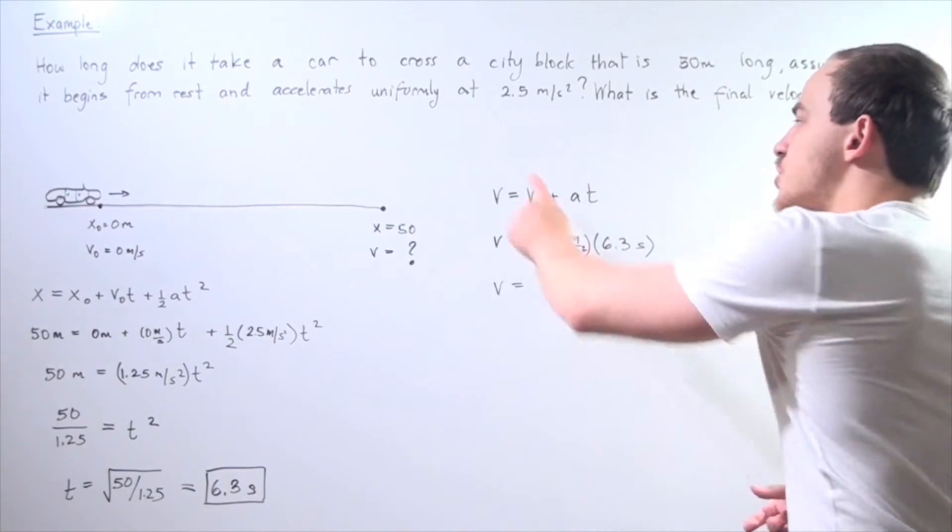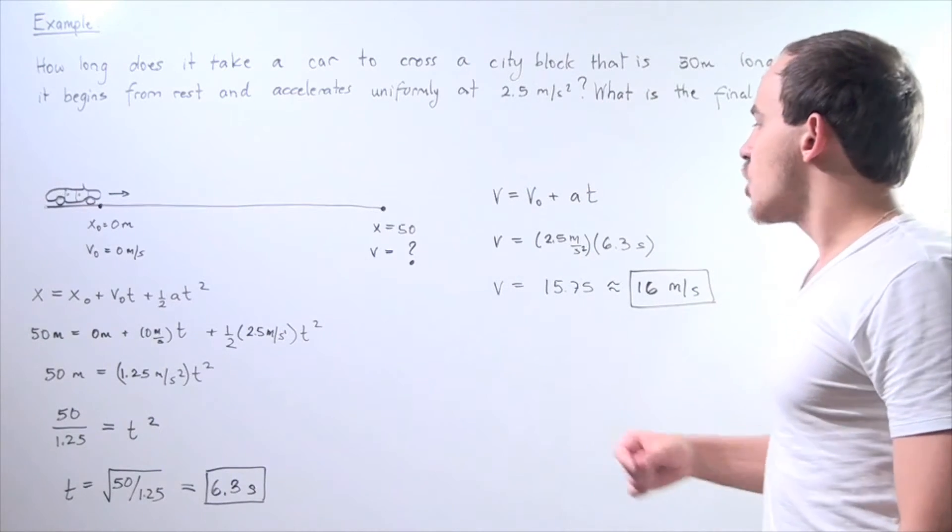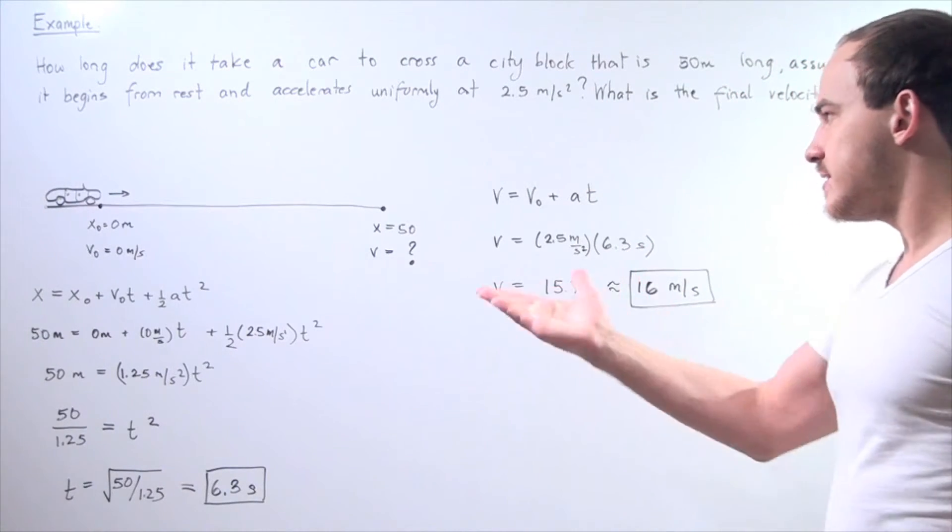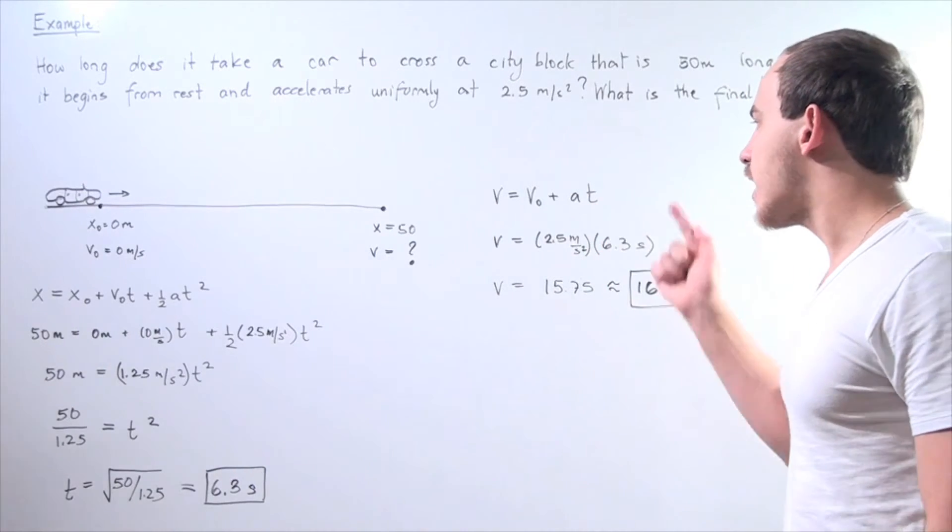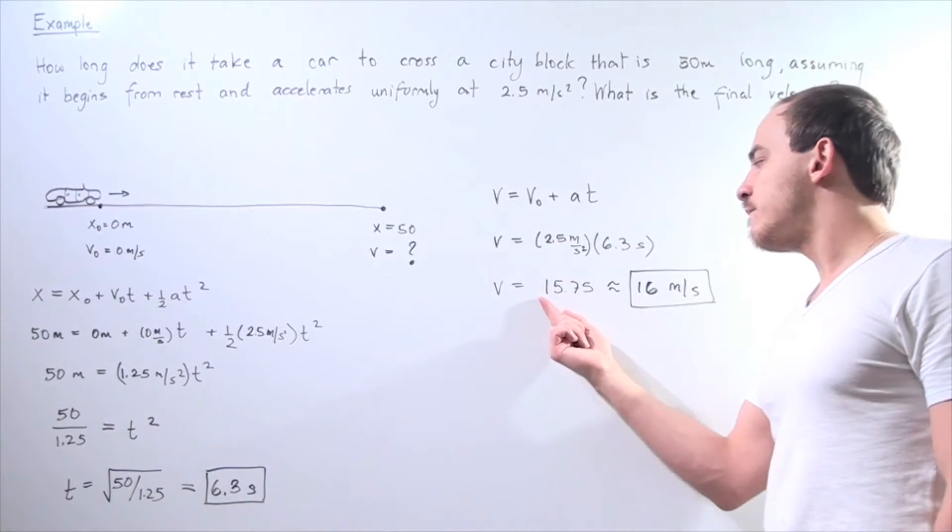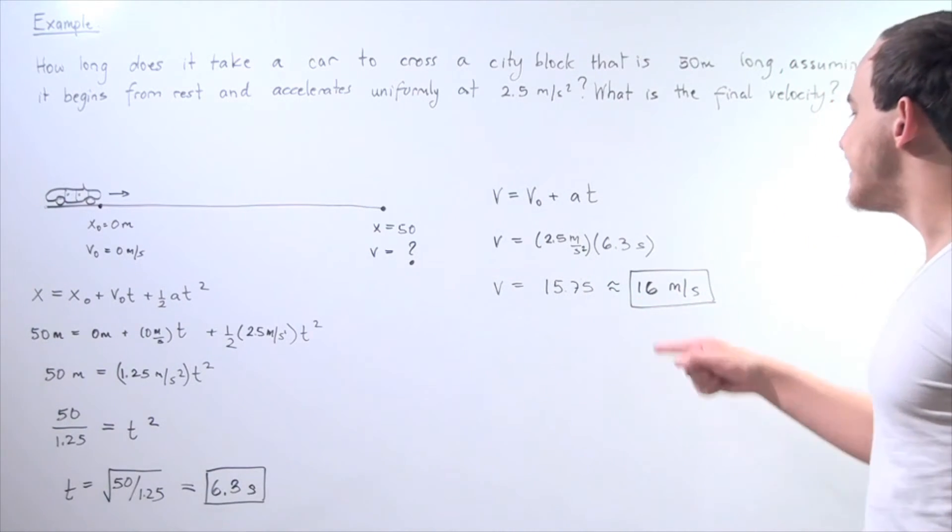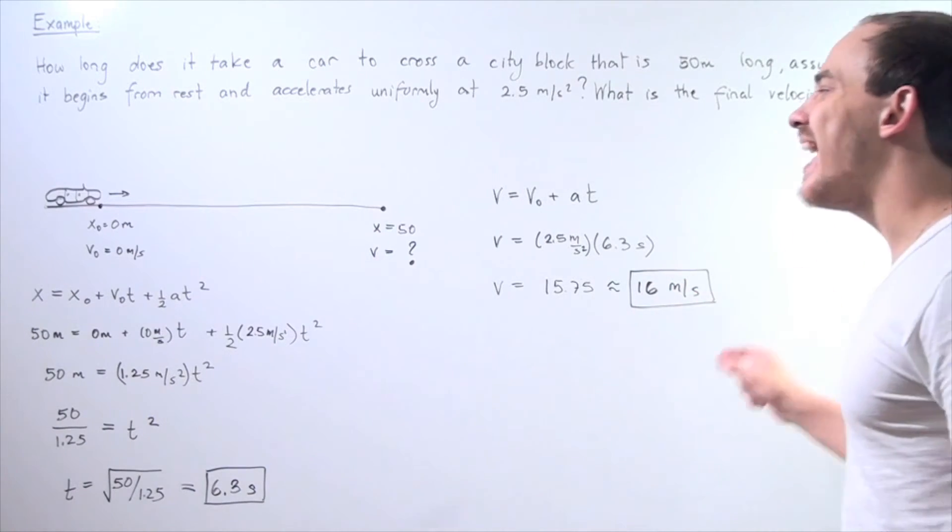Or, we can use the formula V equals V initial plus AT. We know what our V initial is, zero. We know what our A is and our T is. We multiply these two guys out, we get about 15.75. We approximate to two significant digits and we get 16 meters per second.